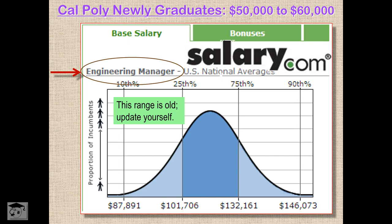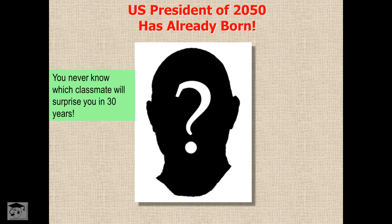The salary is good for purchasing a house earlier than other peers. With career advancement, who knows — your classroom neighbor could be the president in 30 years?